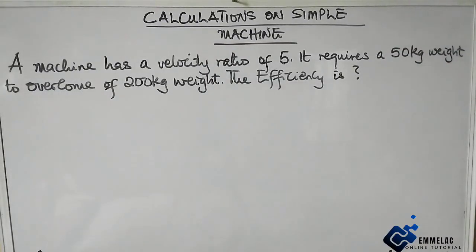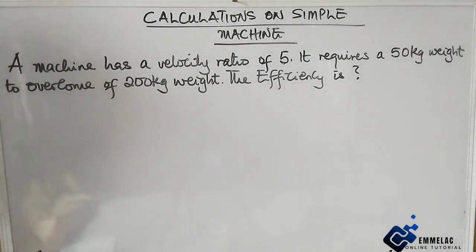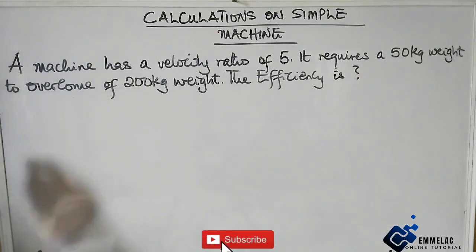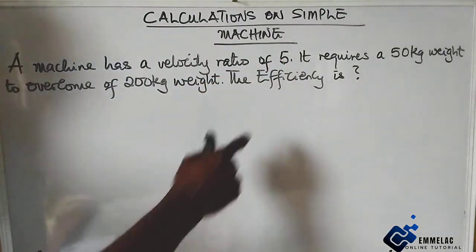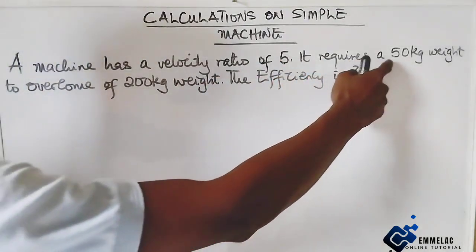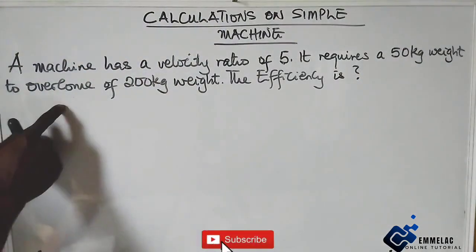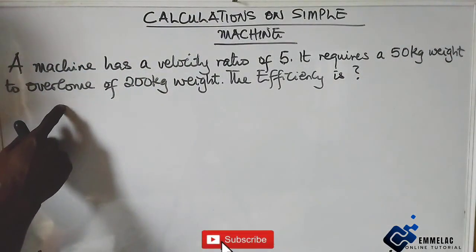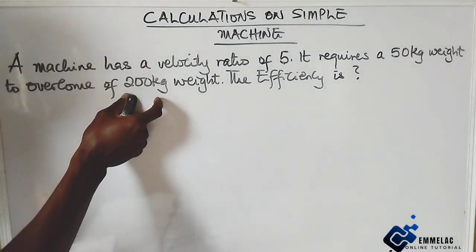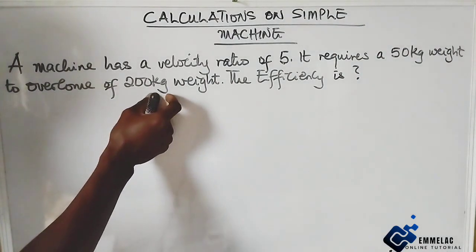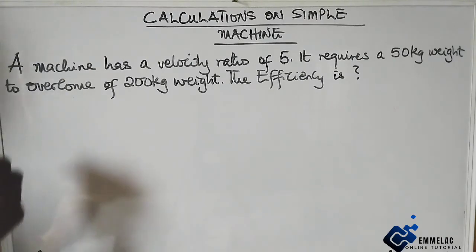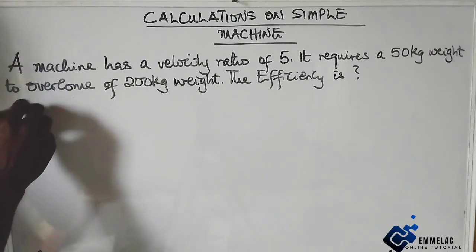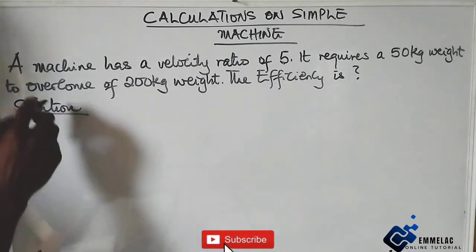Welcome to Emilac online tutorial. Before us is a question on simple machines that says: a machine has a velocity ratio of 5, it requires a 50 kilogram weight to overcome a 200 kilogram weight. Now the efficiency is — first of all, let us write out the parameters we have.